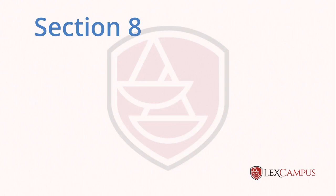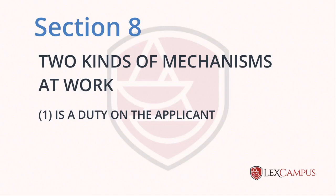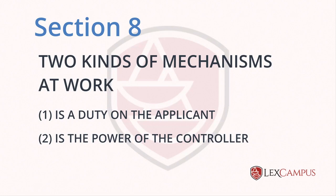The second thing to keep in mind about Section 8 is that it has two kinds of mechanisms at work. Section 8.1 is a duty on the applicant — the entire 8.1 is what the applicant needs to do — and Section 8.2 is the power of the controller. These two are different things. When it is a duty on the applicant, the applicant has to act because it is set by law, and not following the timeline will have serious consequences. Like Section 21 tells us, if you don't follow timelines, the application will be deemed abandoned. But 8.2 is the power of the controller to ask for information, over and above what is already in 8.1. So 8.1 is a duty and 8.2 is a power.